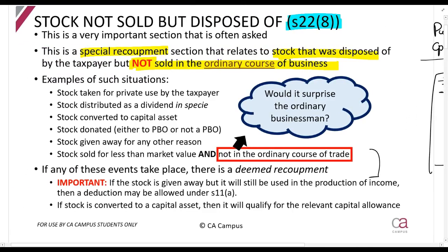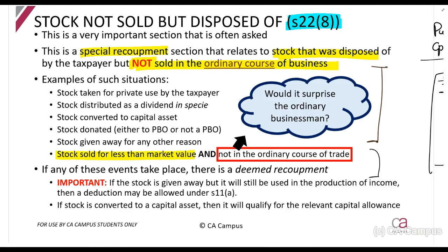If you sell stock at least at its market value, that is fine — for example, an end-of-season sale is fine. But the question to look out for is: would selling at less than market value surprise an ordinary businessman? If you sell something to someone at a special rate not available to anybody else, that would surprise an ordinary businessman and is a problem. You may sell things at less than market value if it's a genuine sale, but if it's a special deal made for someone, that is a problem.